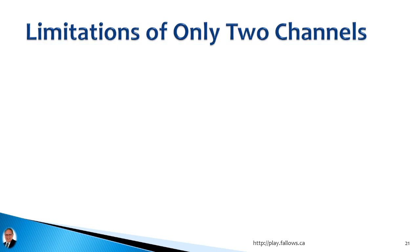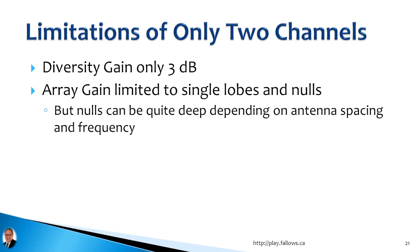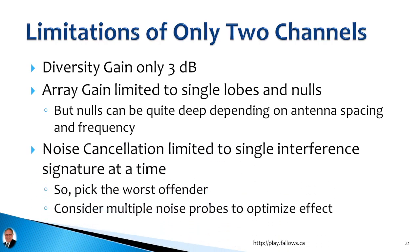There are some limitations to using diversity reception with only two channels. With diversity gain, fighting multipath fading with two antennas, you'll only get about 3 to 6 dB of improvement at best — with four or five antennas you'd get more. Array gain is limited to single lobes and nulls with two antennas, though the nulls can be quite deep depending on antenna spacing and frequency. Noise cancellation is limited to a single interference signature at a time. You pick the worst offender for improvement, but you can also put up multiple noise probes to pick up the best copy of the noise around your home location.